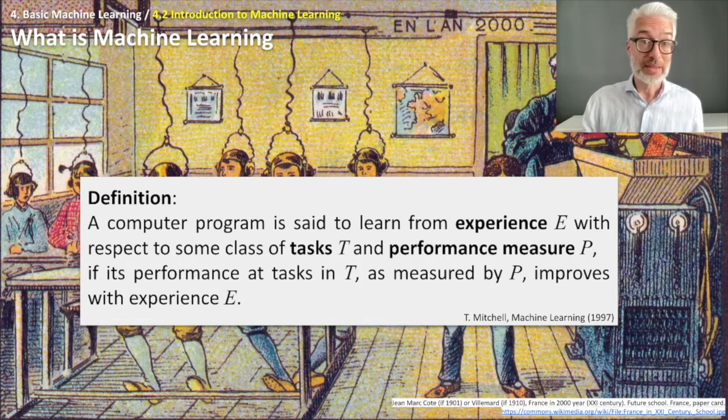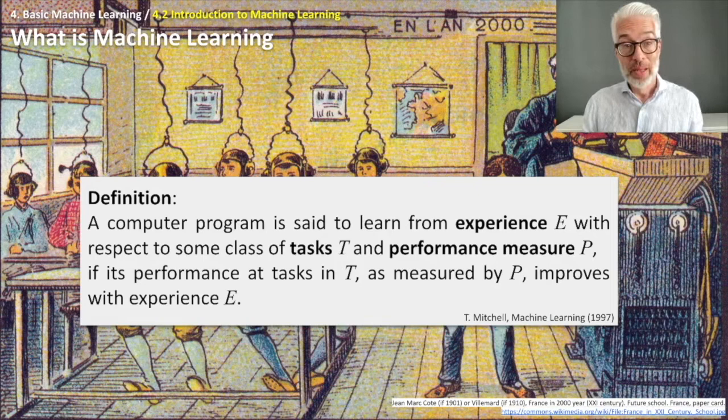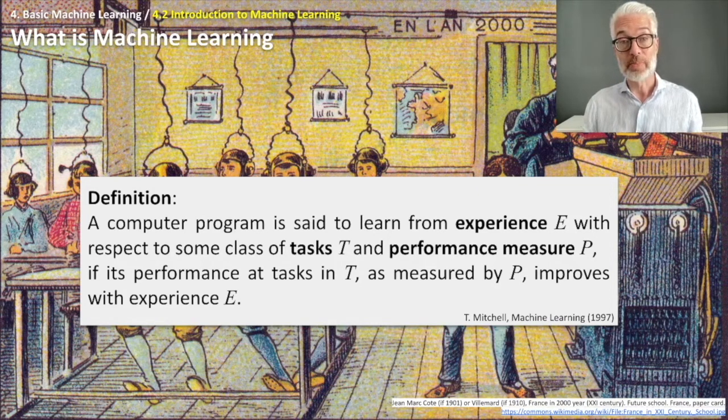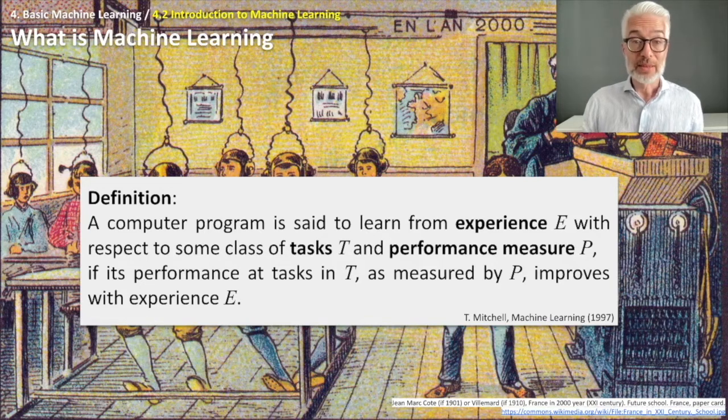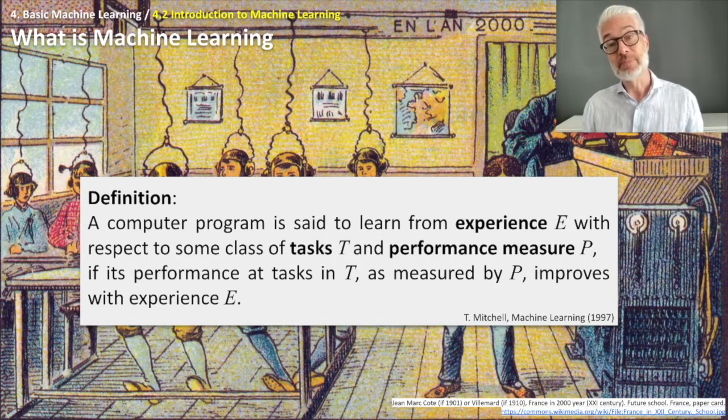If its performance at tasks in T, as measured by P, improves with experience E, that's machine learning.